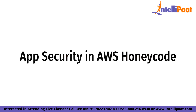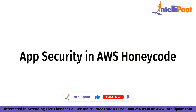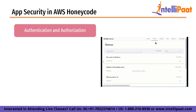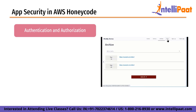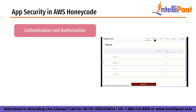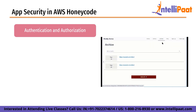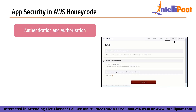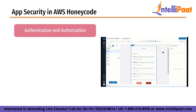Now let's talk about app security in Honeycode. App security is a critical aspect of building an application in Honeycode. It ensures that the app is protected from unauthorized access, data breaches and other security threats. With the increasing number of security threats in the digital world, it is important to consider security throughout the entire application development lifecycle. The first step in app security is to implement authentication and authorization mechanisms. Authentication verifies the identity of the user while authorization determines what actions the user can perform. In Honeycode, this can be implemented using a built-in authentication provider or by integrating with an external provider.